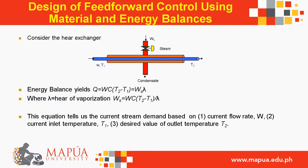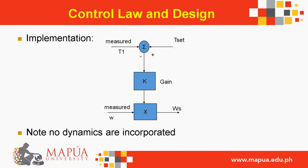Design of feedforward control using material and energy balances — consider the heat exchanger. Energy balance yields: Q = WC·(T2 − T1) = WS·λ, where λ is the heat of vaporization. Therefore WS = WC·(T2 − T1)/λ. This equation gives the steam demand based on current flow rate WC, current inlet temperature T1, and desired outlet temperature T2. The control law design note: no dynamics are incorporated.